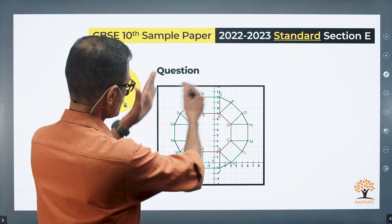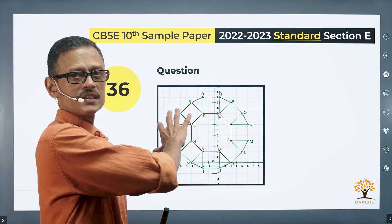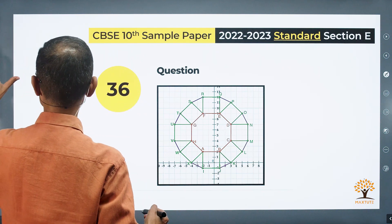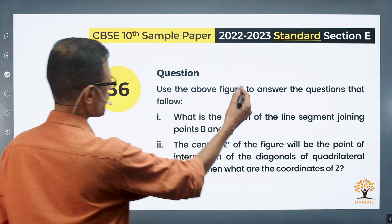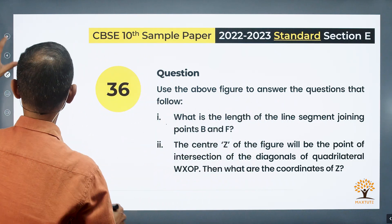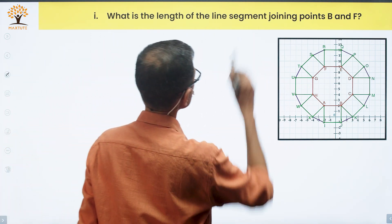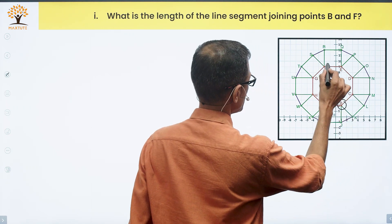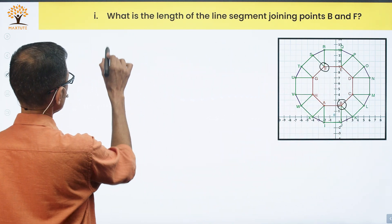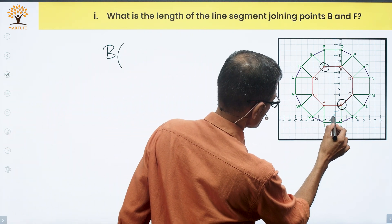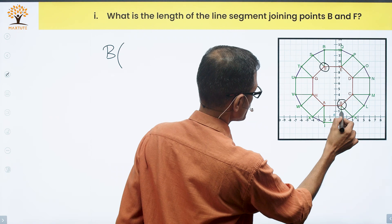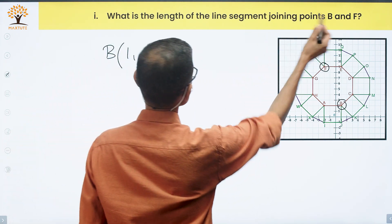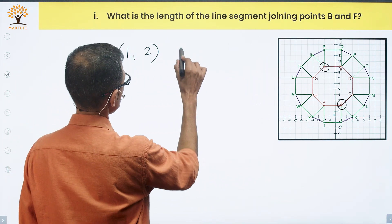This is where the x-axis and y-axis meet, essentially zero. We can look at the coordinates of each point with respect to this. Let's answer the questions based on this information. The first question is, what is the length of the line segment joining points B and F? Let's quickly note down the coordinates of point B - this is zero, the origin. In the x direction, we are moving one unit, and in the y direction, two units. So the coordinates of point B are 1, 2.